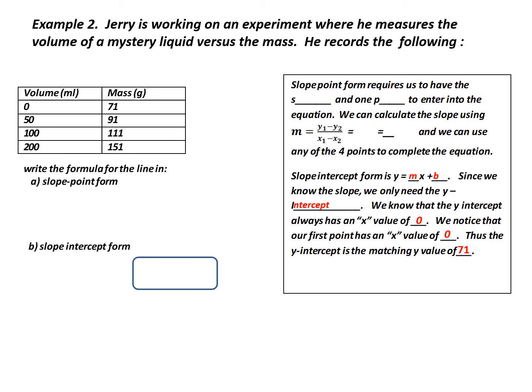Example 2. Jerry is working on an experiment where he measures the volume of a mystery liquid versus the mass. He records the following. Notice there are four entries. Now, write the formula for the line in slope point form and slope intercept form. Well, let's start with slope point form. What do we know about slope point form? We need the slope and we need the coordinates for one point.